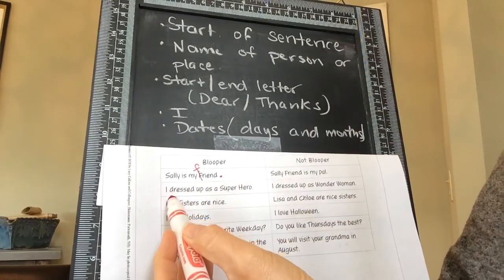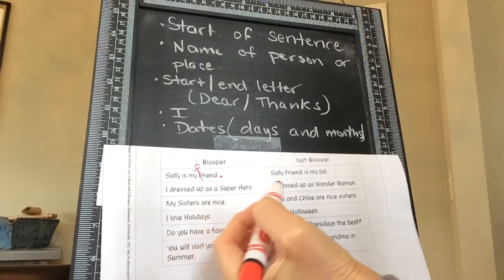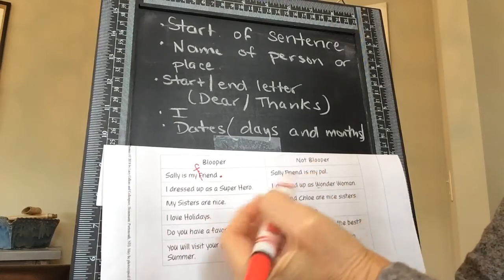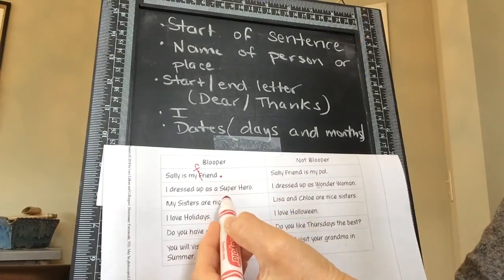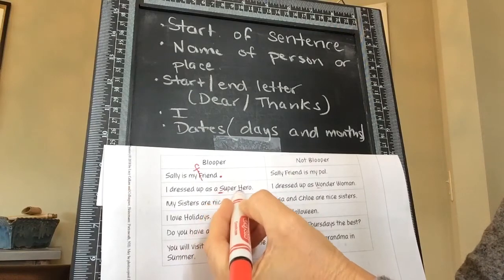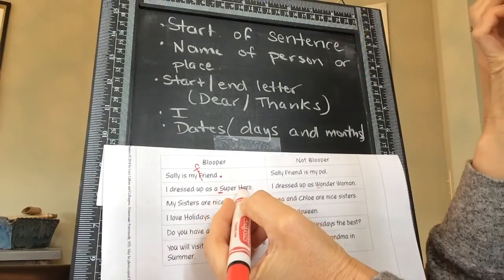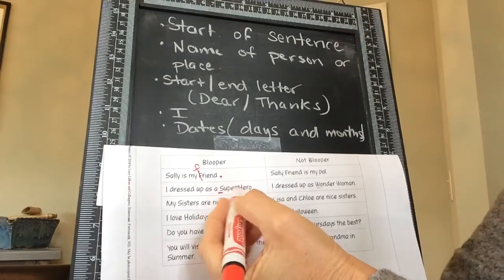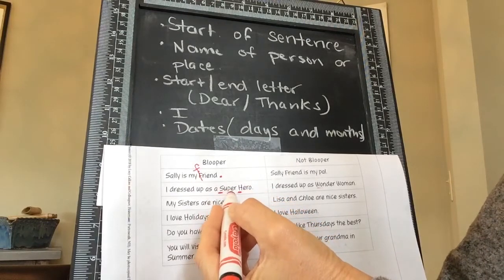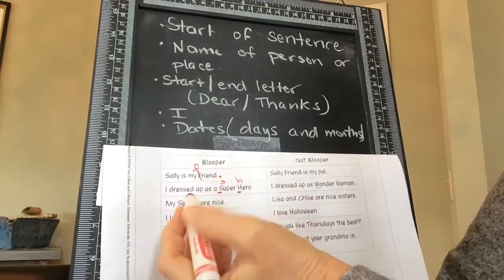This one says, 'I dressed up as a Superhero.' This one says, 'I dressed up as Wonder Woman.' This one's correct because Wonder Woman is a proper name. What's wrong over here? The S in 'Super' and the H in 'hero' should not be uppercase because they're not telling you which superhero — it's not a name, it's just a superhero. So those should be lowercase. They have no reason to be uppercase.